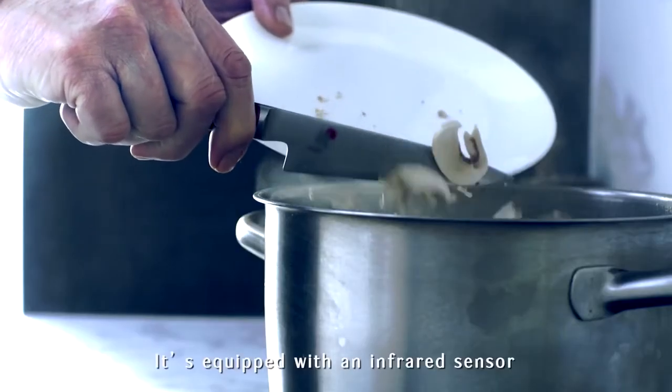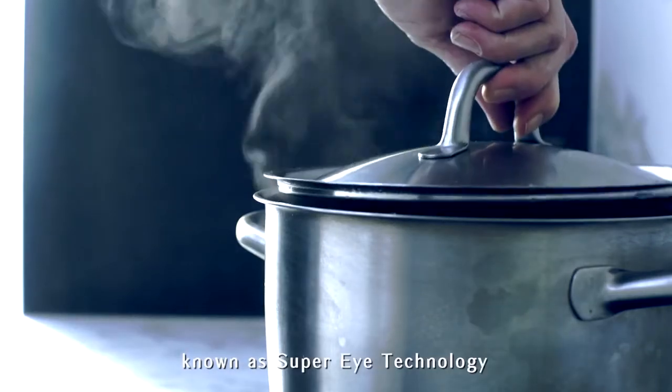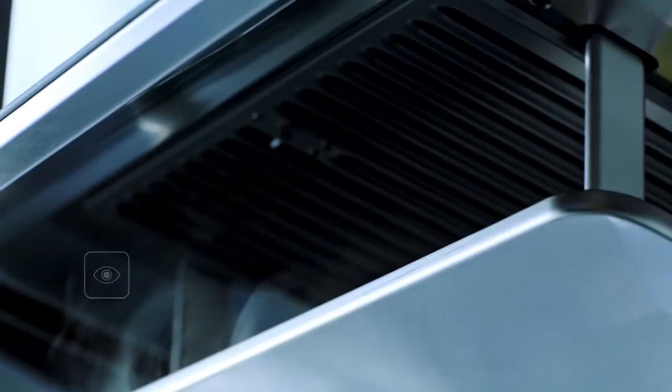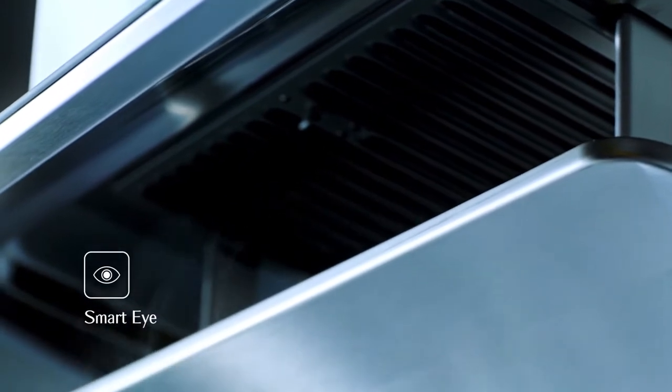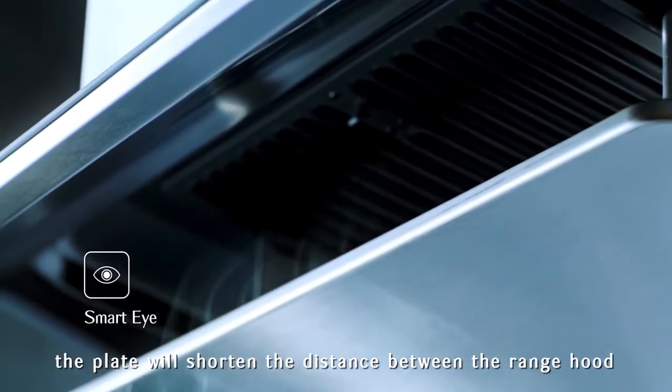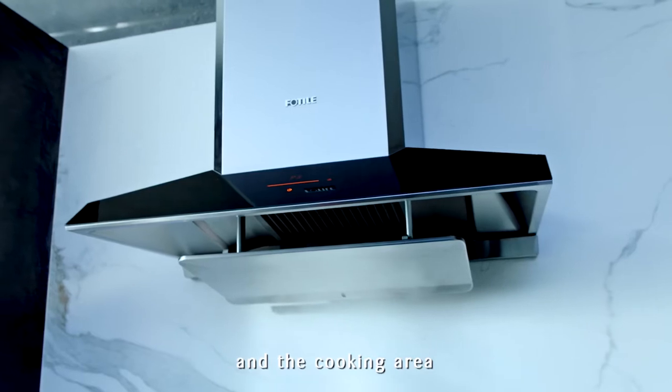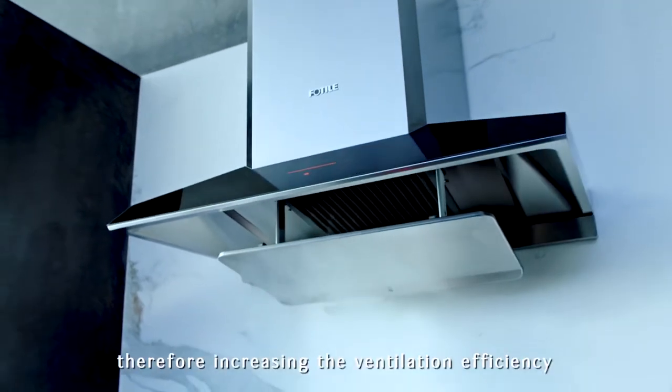It's equipped with an infrared sensor known as the Super-I technology, exclusive to Fotile. According to the smoke concentration, the plate will shorten the distance between the range hood and the cooking area, therefore increasing the ventilation efficiency.